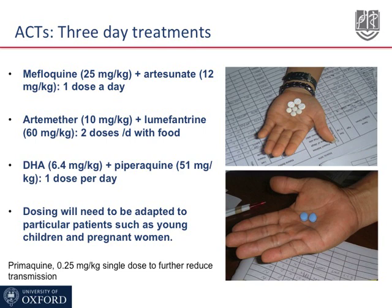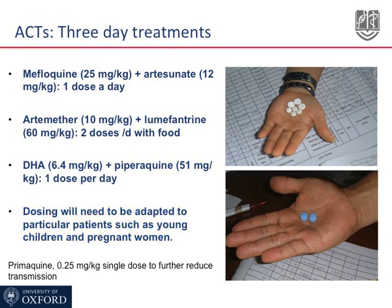The main three ACTs in use in the world today are shown on this slide, including the total dose of each component. It should be noted that dosing will probably be modified for particular groups such as young children and pregnant women, who are often underdosed. Recently, the WHO has added a recommendation to use a single low dose of primaquine added to the three-day regimens for Plasmodium falciparum uncomplicated infections in order to further reduce gametocyte carriage.